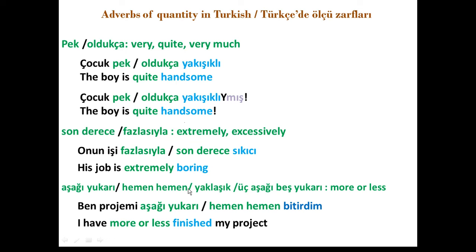Another pair of adverbs of quantity is 'son derece' or 'fazlasıyla', meaning extremely or excessively. For example: 'his job is extremely boring', where the adjective 'sıkıcı' is modified by the adverb of quantity 'fazlasıyla' or 'son derece'.